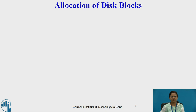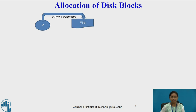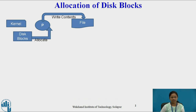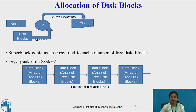Let us see allocation of disk blocks. Whenever a process wishes to write some contents into a file, the kernel allocates disk blocks to the process. These disk blocks are present on disk and these free disk blocks are allocated to the process one at a time. The file system super block contains an array used to cache the number of free disk blocks, and it is necessary to keep track of the number of free disk blocks in the system. This is given by the super block.